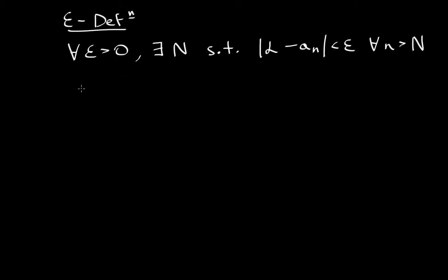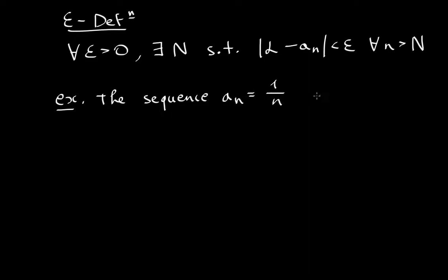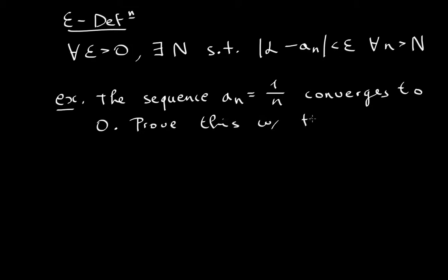On your exam they will give you a sequence and also tell you what the sequence converges to, and your duty is to prove that it does. So let me give you an example. The sequence a sub n, which is equal to 1 over n, converges to zero. And you have to prove this with the limit definition.